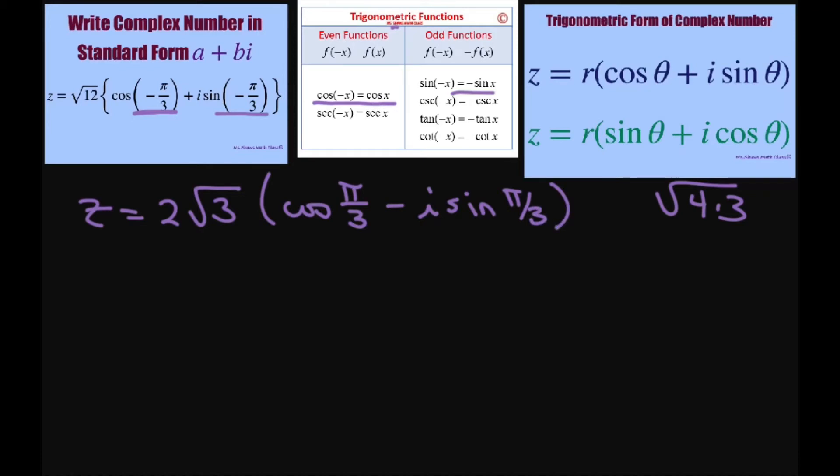Now all we have to do is evaluate. So we have 2 times the square root of 3, cosine of pi divided by 3 is 1 half. That's 60 degrees, so that's 1 half.